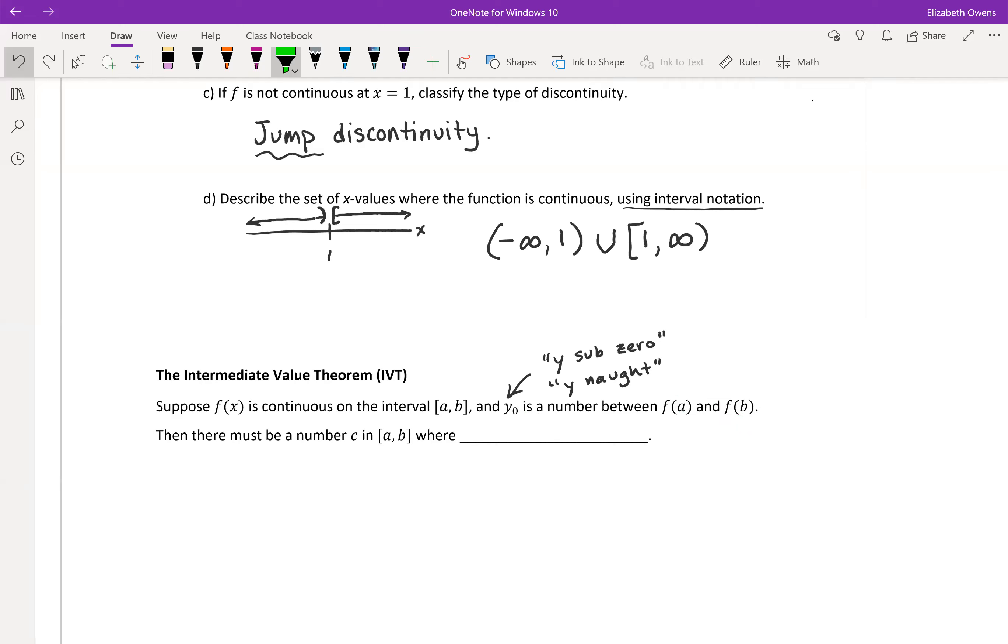So if all of these criteria, the things we're supposing here, if all of this is met, then there must be a number c in that interval from a to b where f(c) equals y not. So just to refresh, c, a, and b, those are all x values. So c is in the interval between x equals a and x equals b, and y not is in that interval of y values between f(a) and f(b).